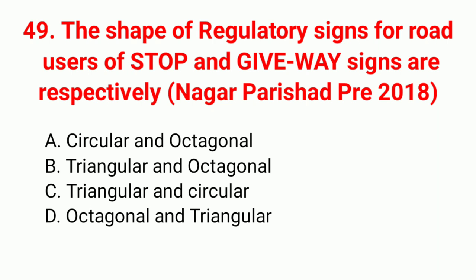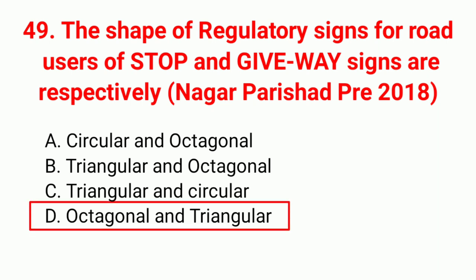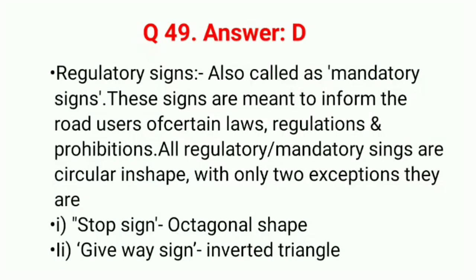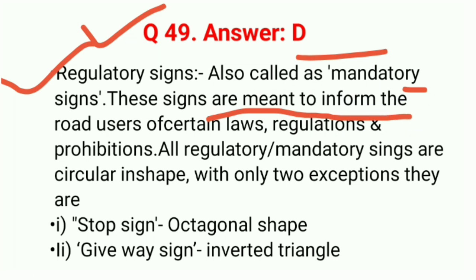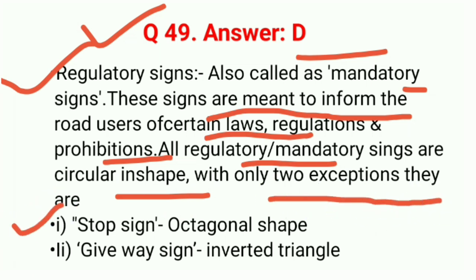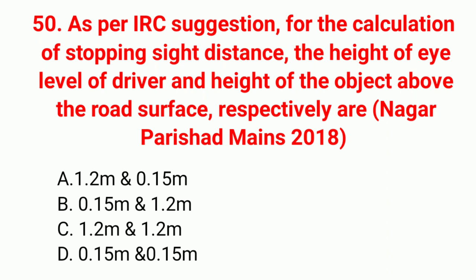Question 49: The shapes of regulatory signs — stop and give way signs are respectively — correct answer option D: octagonal and triangular. Regulatory signs (also called mandatory signs) are meant to inform road users of certain laws and regulations. All regulatory signs are circular in shape with two exceptions: stop sign is octagonal, give way sign is an inverted triangle. Answer is D.